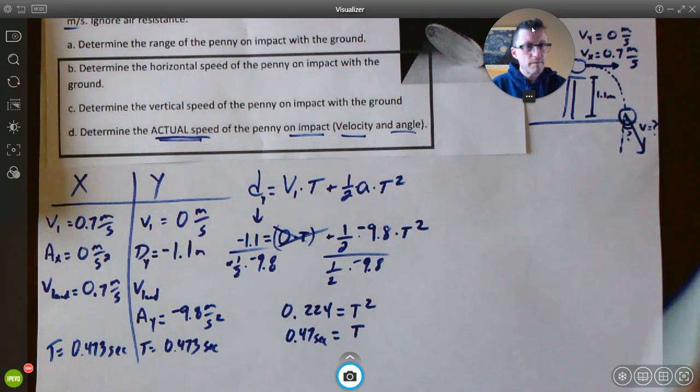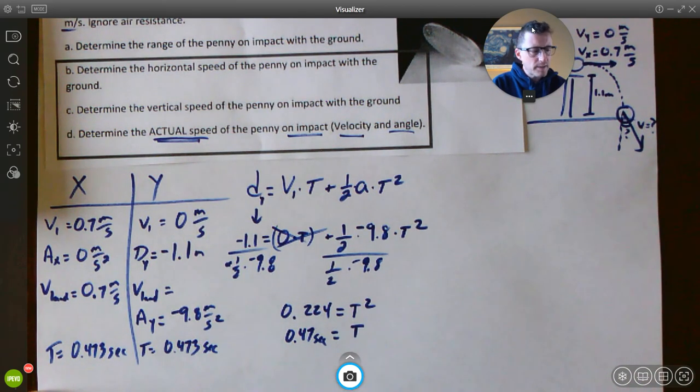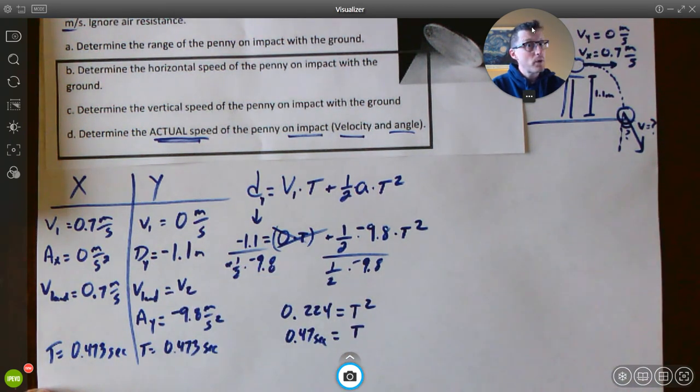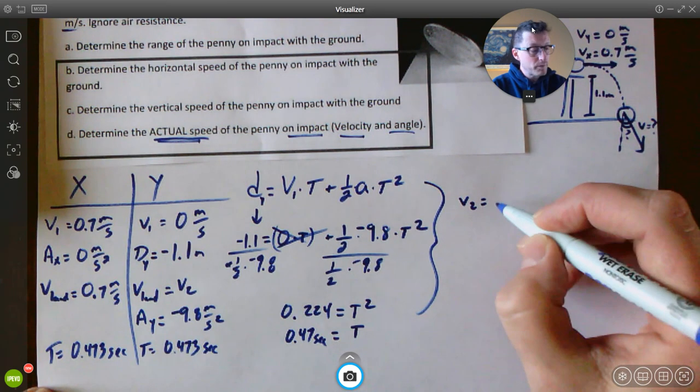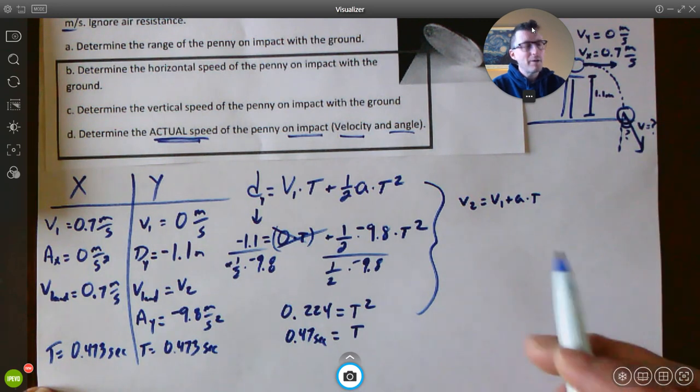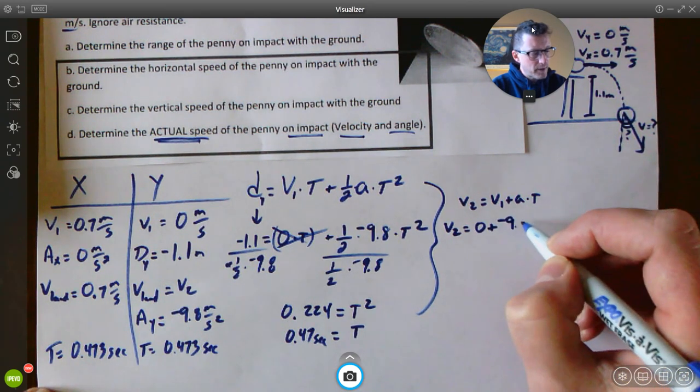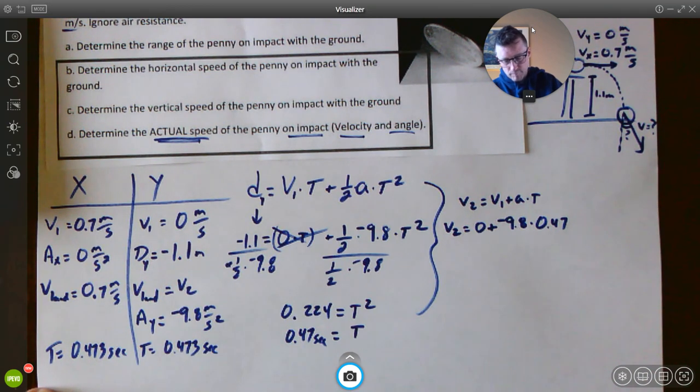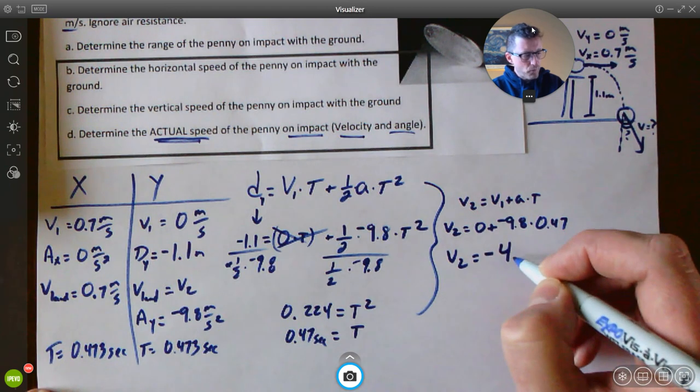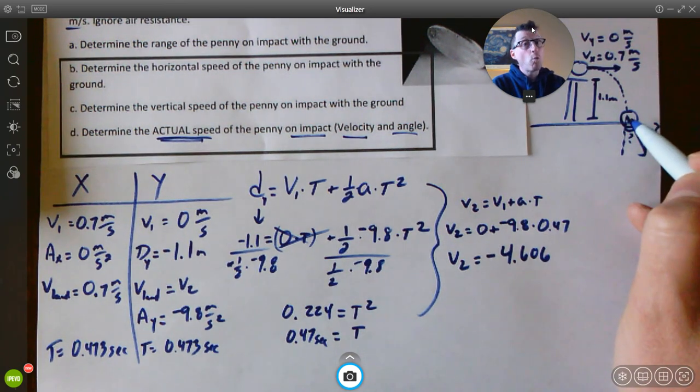So what do we do with that? Well, we need to know the velocity of the marble in the Y direction when it lands. That's a piece that we have missing. Now let's look at our equations again and say, okay, how can we find the velocity when it lands? Well, think about that. This is like a V2. So we need an equation that has a V2 in it. And we do have a good equation that has a V2 in it. We have V2 equals V1 plus A times T. Now that we have a V1 and A and a T, we can solve for this. Let's do that. V2 equals 0 plus negative 9.8 multiplied by 0.47. Type that into your calculator. And we get this number here. V2 equals a negative 4.606. That is the velocity of the marble in the Y direction when it lands.